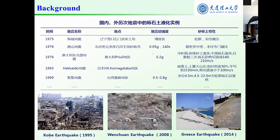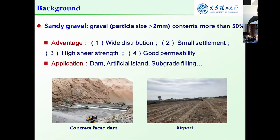Sand gravel generally refers to sand and gravel composites with gravel content, meaning particle size more than two millimeters, with content more than 50 percent. Due to wide distribution, small settlement, high shear strength, and good permeability, it is widely used in engineering construction such as concrete face dams, artificial islands, and subgrade filling.